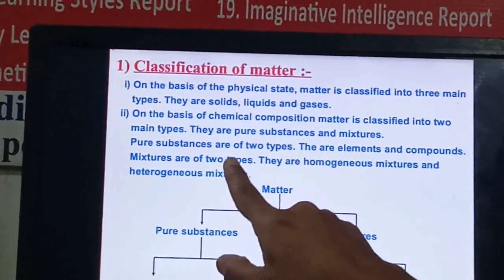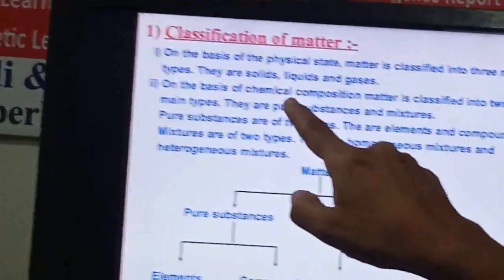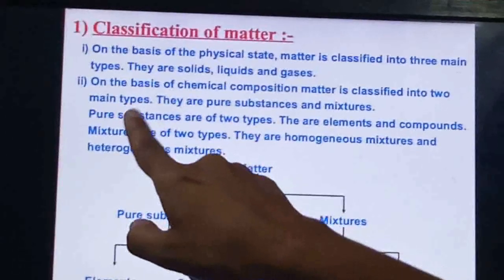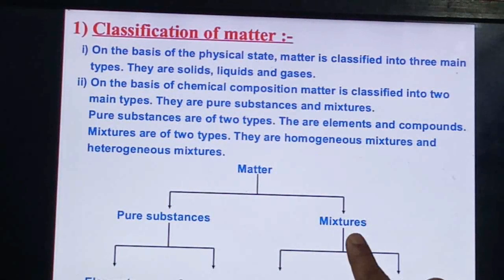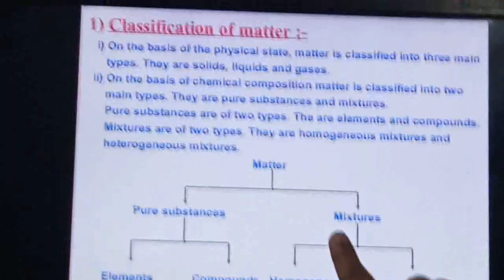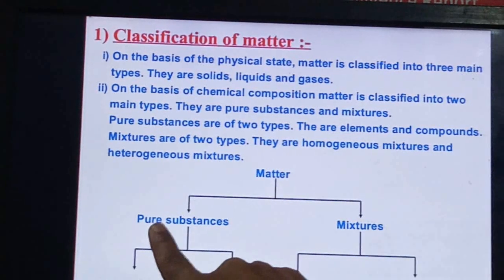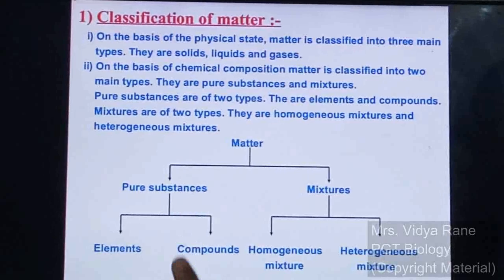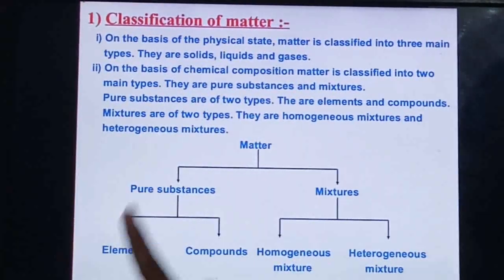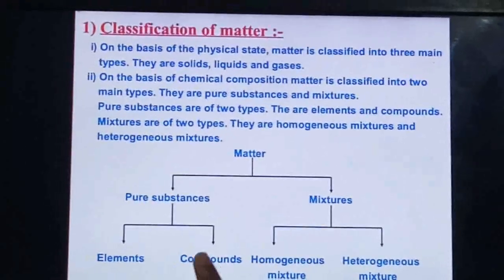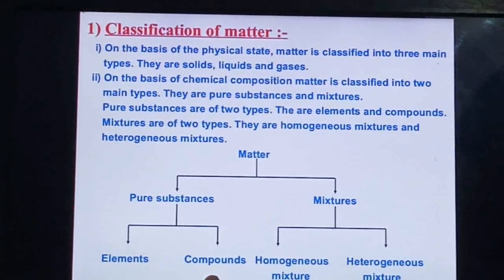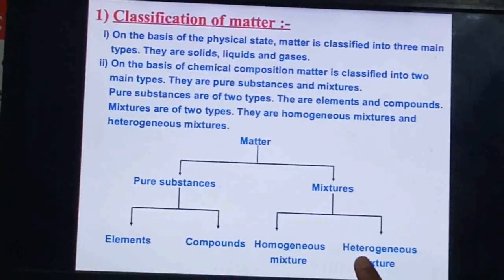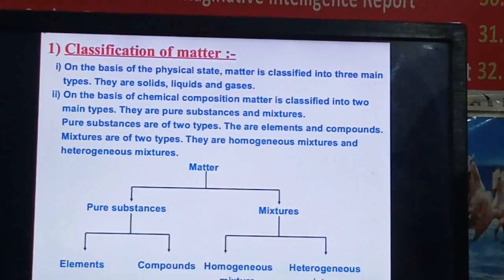We also got a general idea in chapter 1 about classification on the basis of chemical composition — how they are made up. Based on their chemical composition, matters are classified into two main types: pure substance and mixture. Pure substances are further classified into elements and compounds. Mixtures are of two types: homogeneous and heterogeneous.